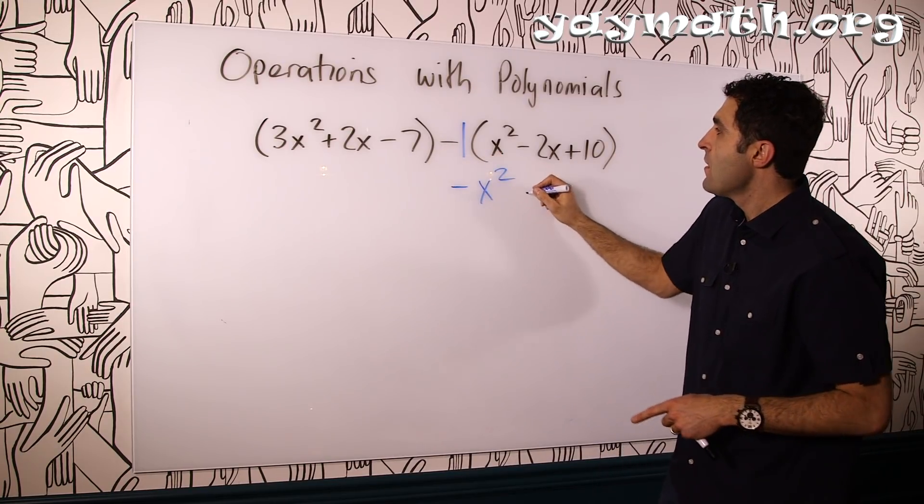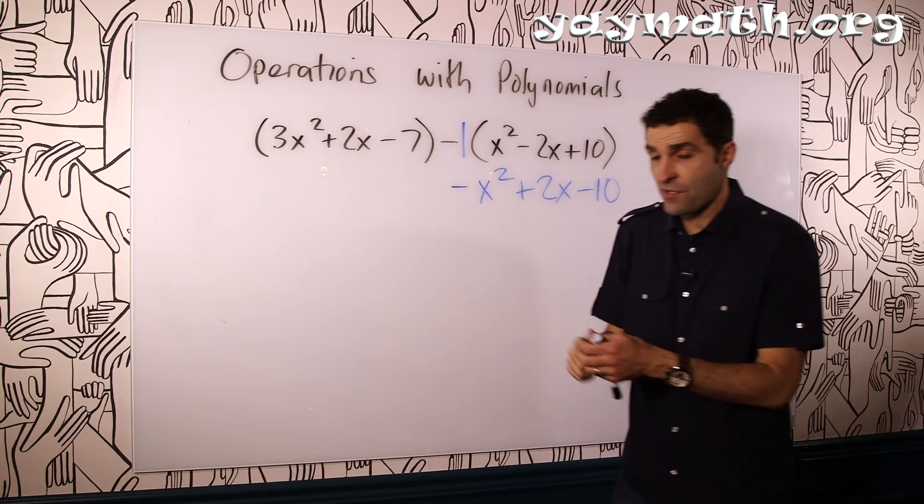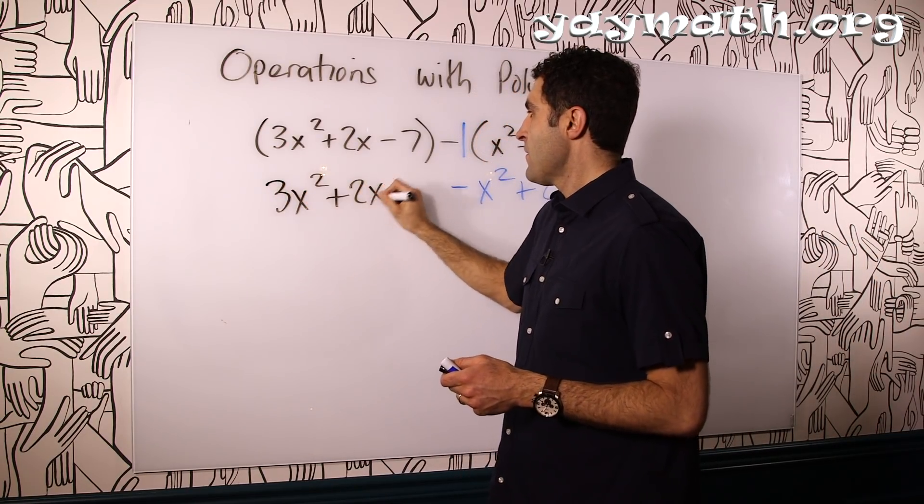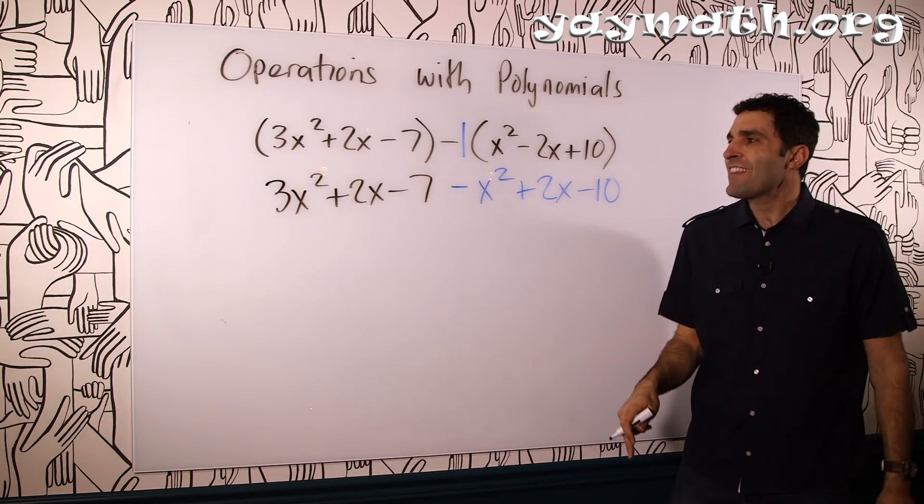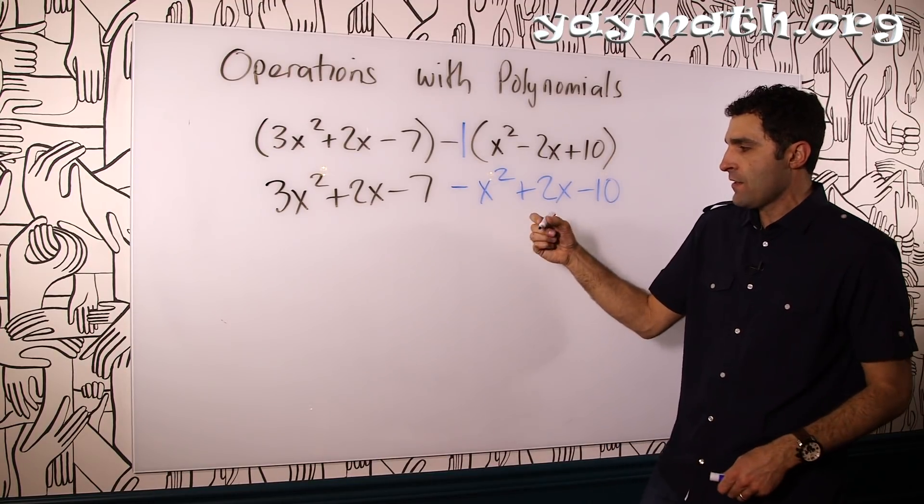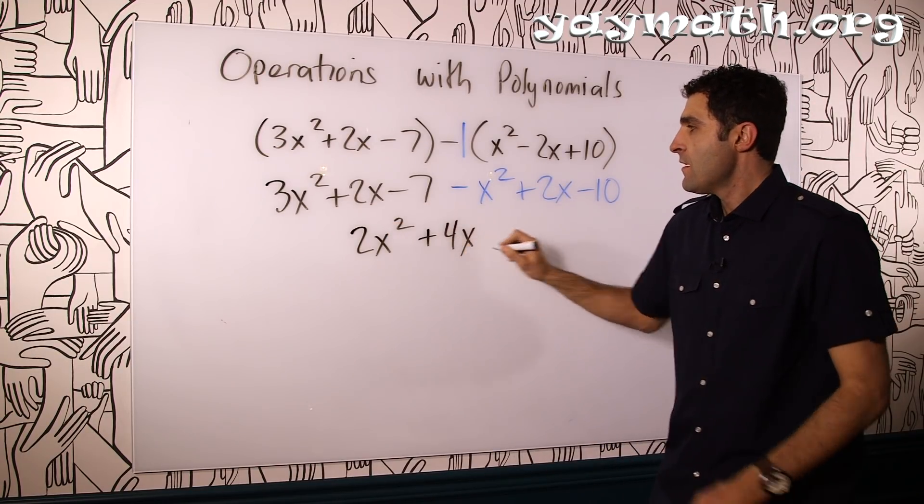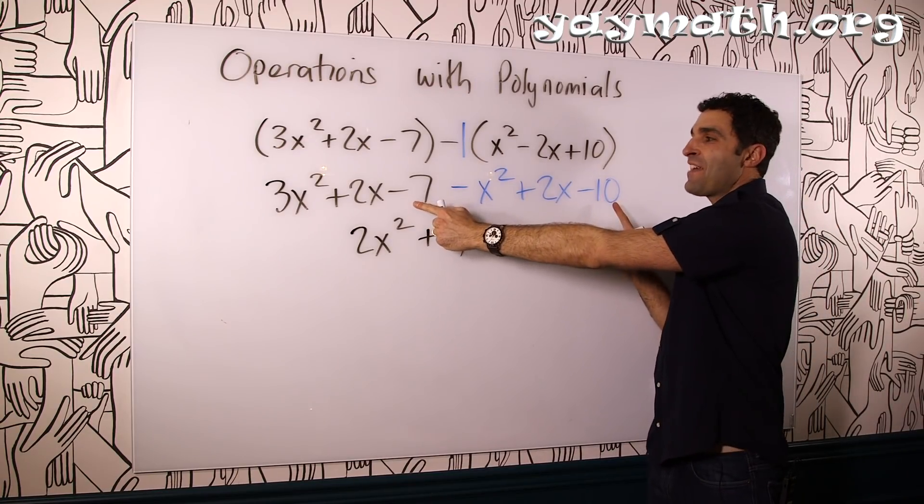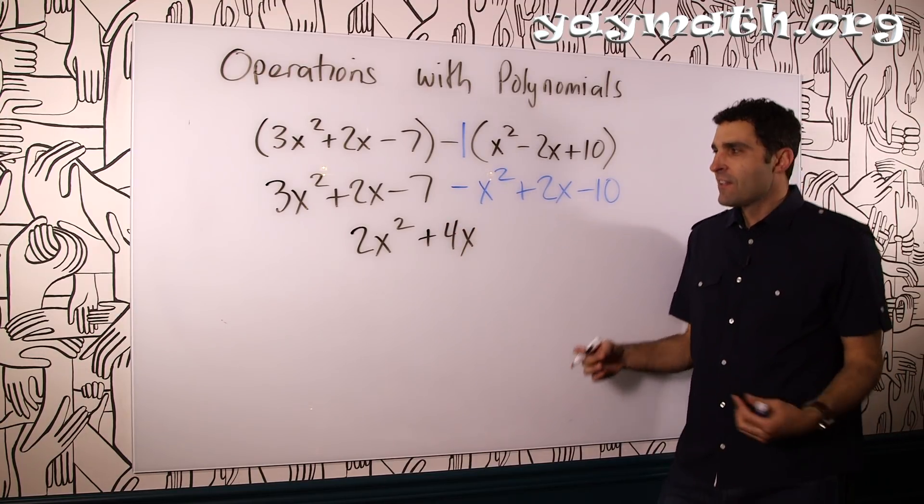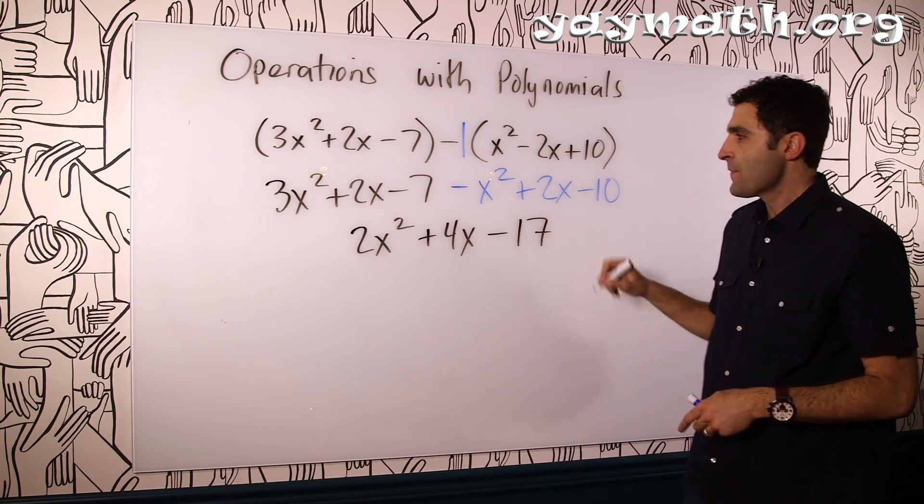This would result in negative x squared plus 2x minus 10. And then over here the parentheses serve no purpose so we can just take them off: 3x squared plus 2x minus 7. Combining like terms, 3x squared and minus x squared results in 2x squared. 2x plus 2x is 4x. Negative 7 and negative 10 will be minus 17. Pretty much it.